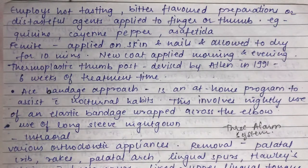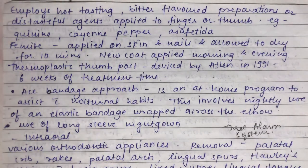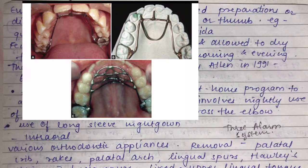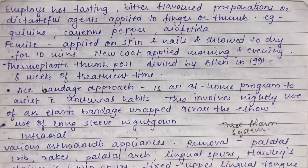The ace bandage approach is an at-home program targeting nighttime habits, involving nightly use of an elastic bandage wrapped around the elbow, sometimes combined with long-sleeved nightgowns. Various intraoral orthodontic appliances are also used, including removable or fixed palatal cribs. These break the suction force of the digit on the anterior segment, remind the patient of the habit, and make it a non-pleasurable experience. An oral screen is a functional appliance that redirects pressure.